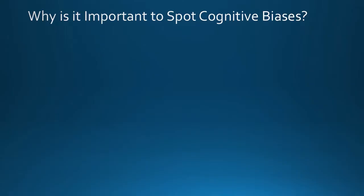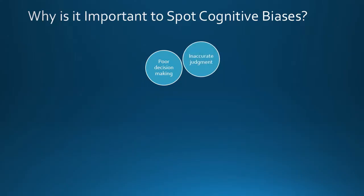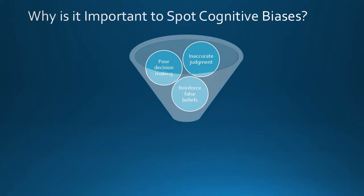Why is it important to spot cognitive biases? It's important to spot cognitive biases because they can lead to poor decision-making, inaccurate judgments, and reinforce false beliefs. By recognizing and correcting for these biases, we can make more informed and rational decisions. It's also important to understand that everyone is susceptible to cognitive biases — it is not a reflection of intelligence or competence.